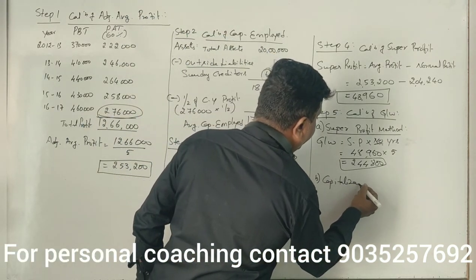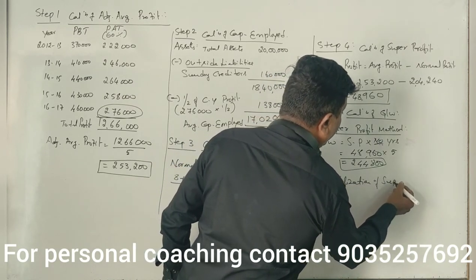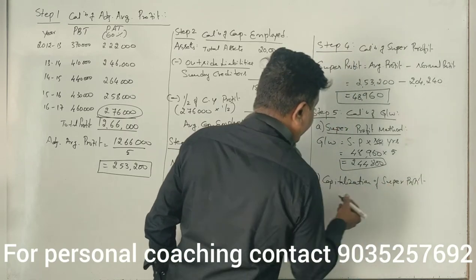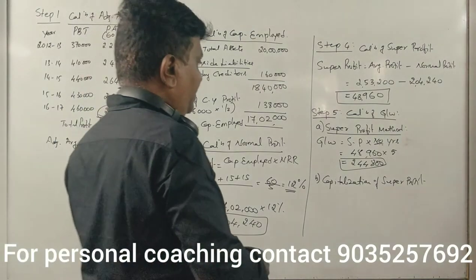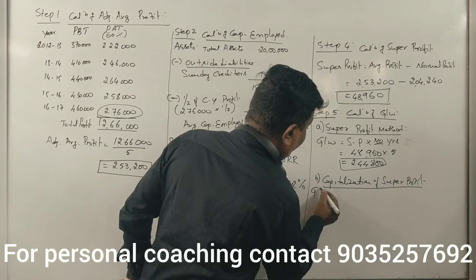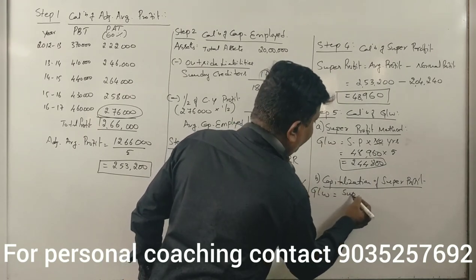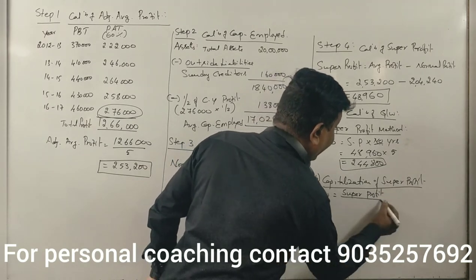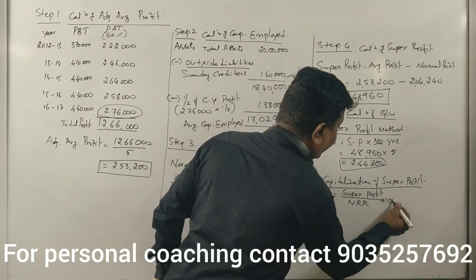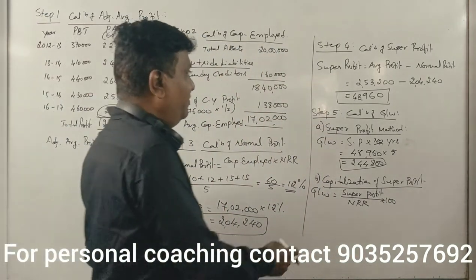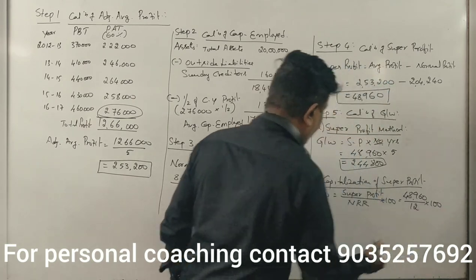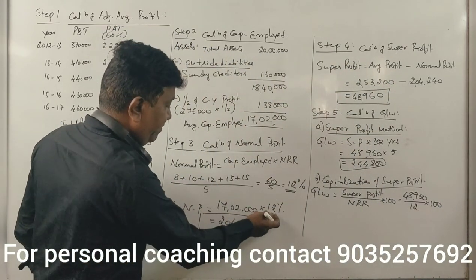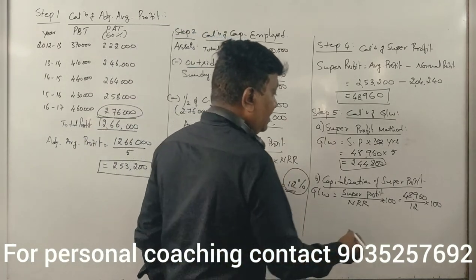Method 2 — Capitalization of super profit: Goodwill equals super profit divided by normal rate of return, multiplied by 100. That is 48,960 divided by 12, multiplied by 100 = 4,08,000.